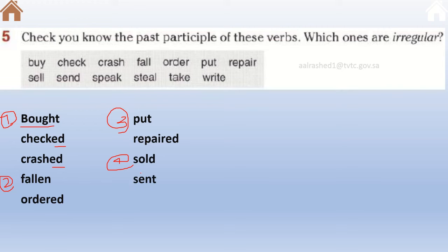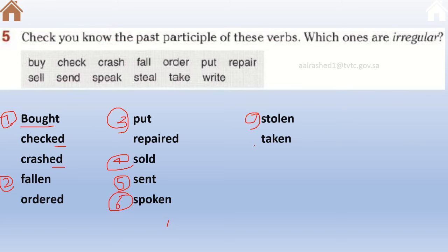'Send' becomes 'sent' — irregular — meaning to deliver something from one point to another. 'Speak' becomes 'spoken' — irregular — basically meaning to talk. 'Steal' becomes 'stolen' — irregular, the seventh irregular verb. 'Take' becomes 'taken' — irregular — to get something. 'Write' becomes 'written' — irregular. All of these highlighted irregular verbs need to be memorized in their past participle form in order to write a correct present perfect sentence.